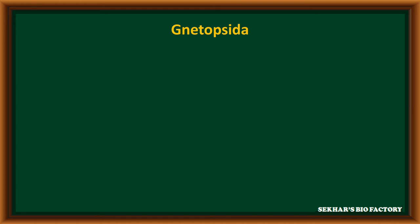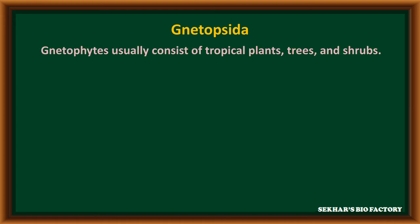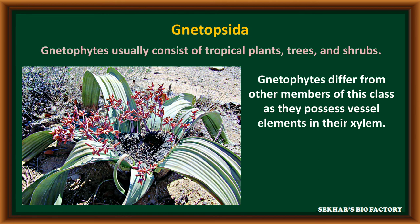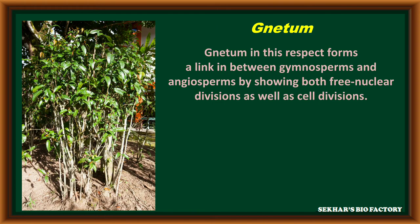The third group is Gnetopsida. Gnetophytes usually consist of tropical plants, trees and shrubs. Gnetophytes differ from other members of this class as they possess vessel elements in their xylem, which is the most important character of Gnetopsida. It includes advanced gymnosperms. Gnetum is an example. Gnetum is described as a link between gymnosperms and angiosperms, showing both free nuclear divisions as well as cell divisions.